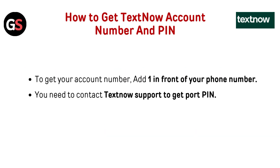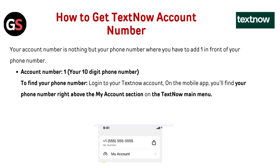To get your account number, add a '1' in front of your phone number. You need to contact TextNow support to get the port PIN. Your account number is simply your phone number with a '1' added in front — so it becomes '1' followed by your 10-digit phone number.